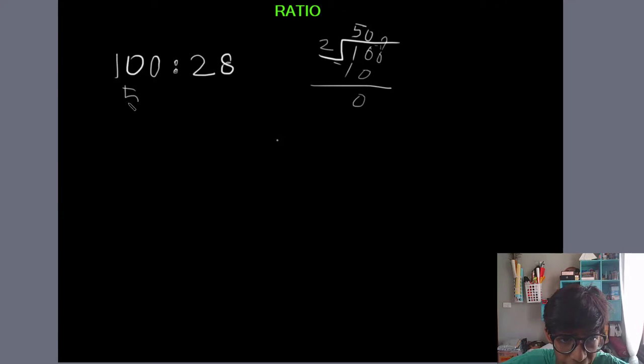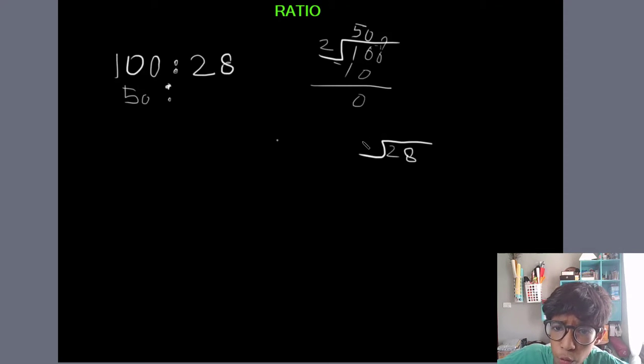So we're going to write here 50. Now we're going to divide 28 with two. So 28 will be here, two will be here. So two ones are two, minus zero, it will come down.